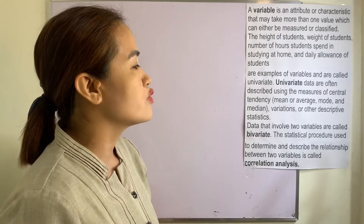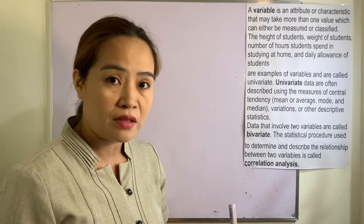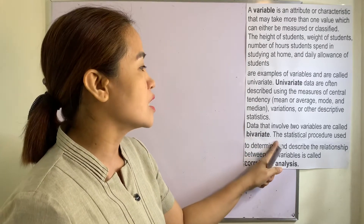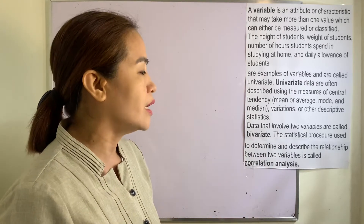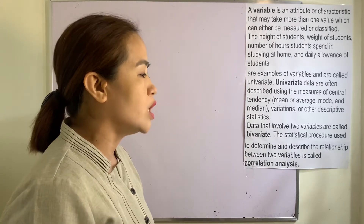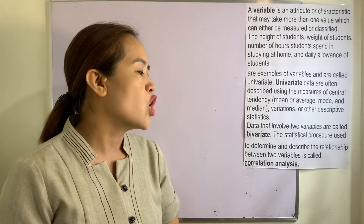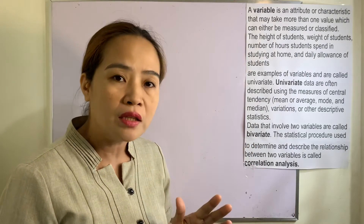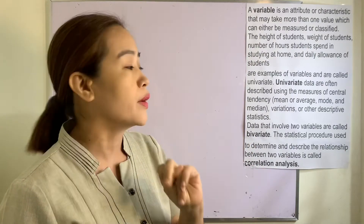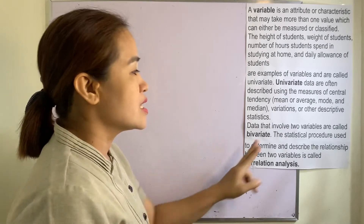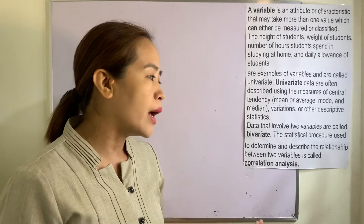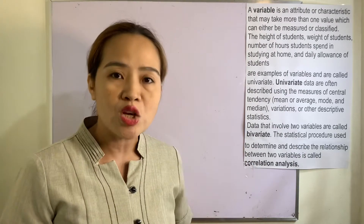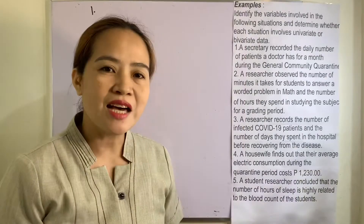Data that involve two variables are called bivariate. The statistical procedure used to determine and describe the relationship between two variables is called correlation analysis. So when we say bivariate, it will involve two variables, and the statistical procedure used is correlation analysis.